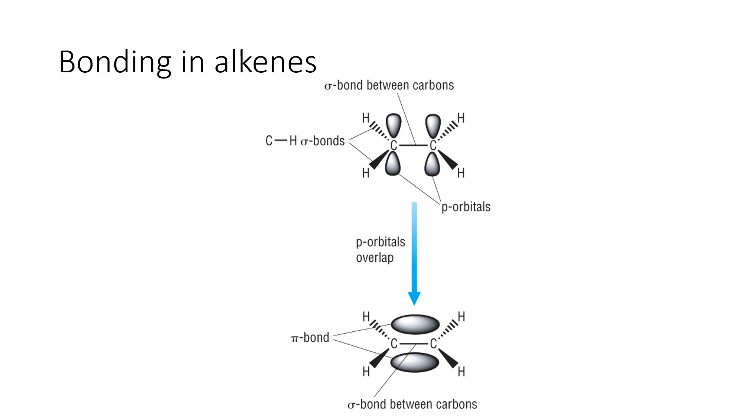Sigma bonds are normally down to the overlap of the s orbitals. But in addition, when you have an alkene, you also have a pi bond or the overlap of the p orbitals. So you can see each carbon has a p orbital going above and below the plane. And what you get is this sideways overlap of the p orbitals to create a pi bond.